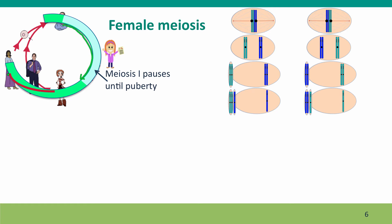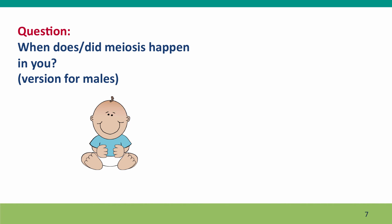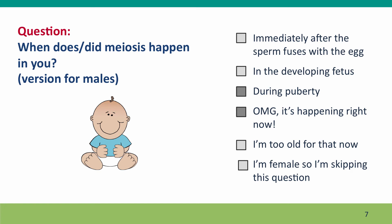Here's a question for the males in the class: when does or did meiosis happen in you? Check all that apply; females should skip this question. The answer is that meiosis happened during puberty — unless you're a very young male who hasn't hit puberty yet — and almost certainly it's happening right now, because you're producing millions of sperm every day, so it's going on continuously.